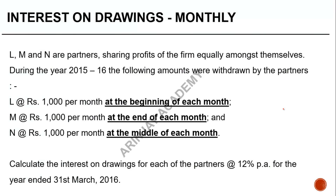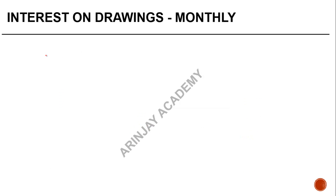Let's say L, M, and N are partners sharing profits of the firm equally. During the year 2015-16, the following amounts were withdrawn: Partner L withdrew ₹1,000 per month at the beginning of each month — total drawings ₹12,000. Partner M withdrew ₹1,000 per month at the end of each month — again total drawings ₹12,000. Partner N withdrew ₹1,000 at the middle of each month — total drawings ₹12,000. Calculate interest on drawings for each partner at 12% per annum for the year ended 31st March 2016.